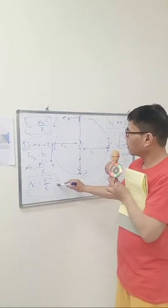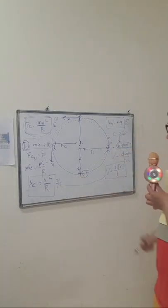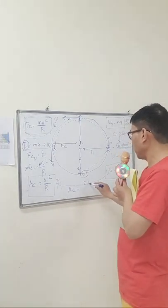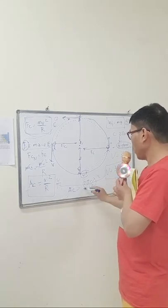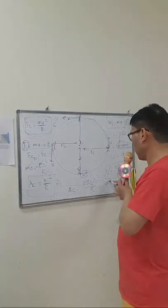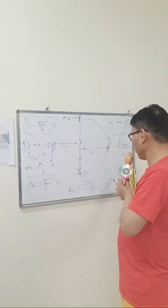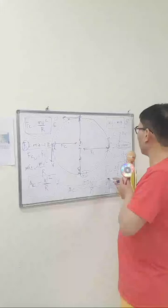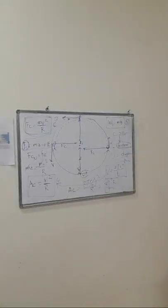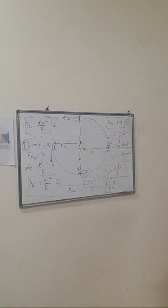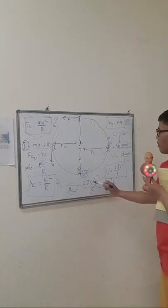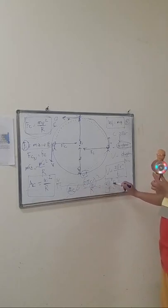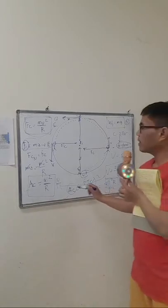If you have that velocity formula and substitute it into the centripetal acceleration equation, you get another equation. Substituting v = 2πr/t into a = v²/r gives: a = (2πr/t)²/r, which simplifies to a = 4π²r/t². This is your second formula for centripetal acceleration. So now you have two formulas for centripetal acceleration.